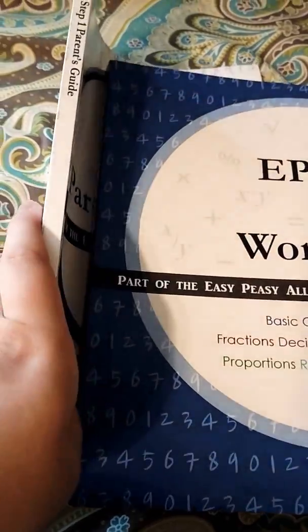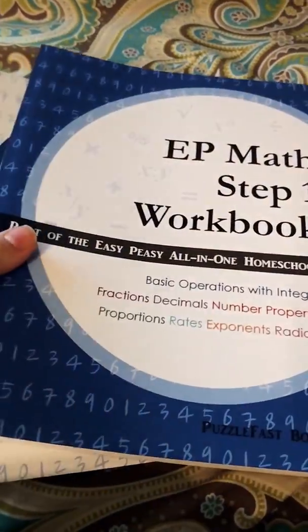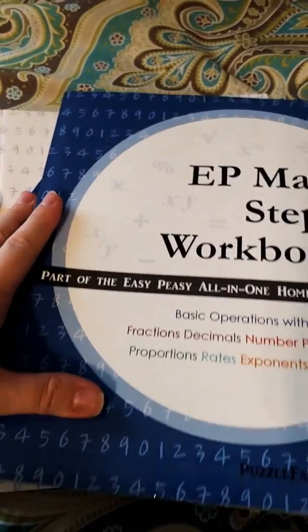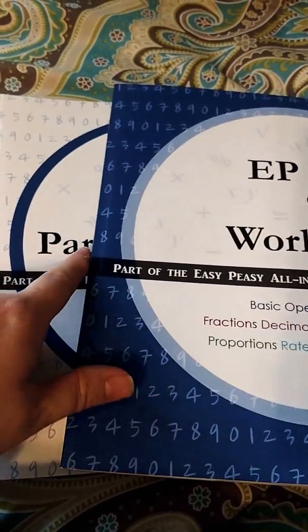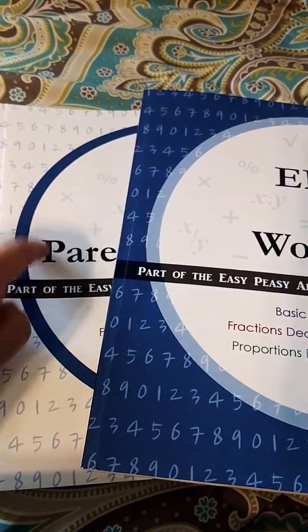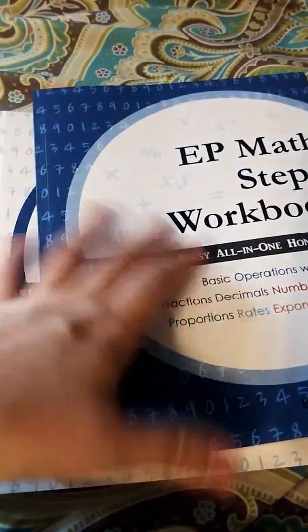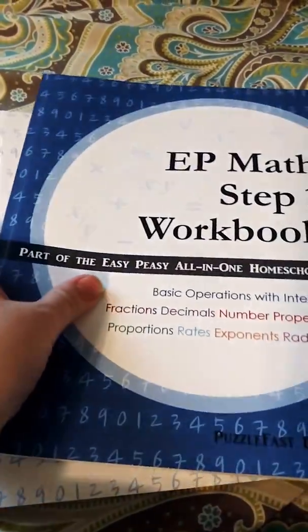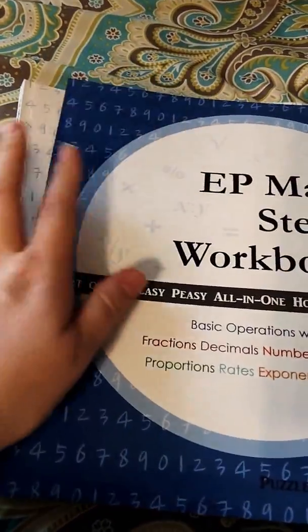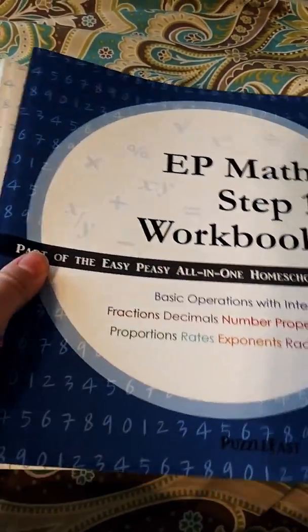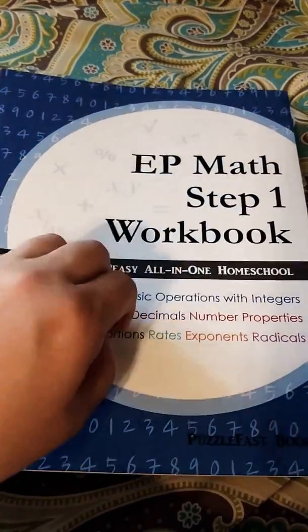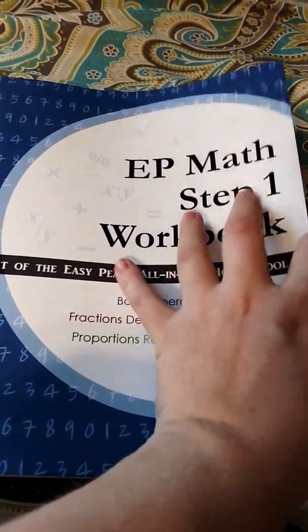This is your parent's guide. Both of these together cost under $20. I think I paid $9.99 for this one on Amazon and about seven dollars for this one, which is pretty great for a math curriculum. You can do their online version for free, but if you like to have the workbook in hand, then their offline version is a really great alternative.